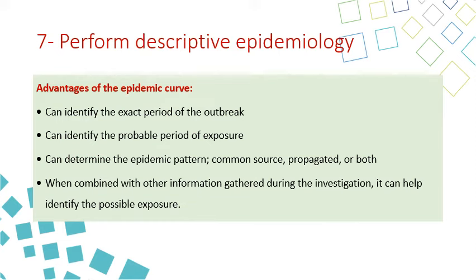Step seven is to perform descriptive epidemiology. The advantages of the epidemic curve are: it can identify the exact period of the outbreak, identify the probable period of exposure, and determine the epidemic pattern — common source, propagated, or both. When combined with other information gathered during the investigation, it can help identify the possible exposure.